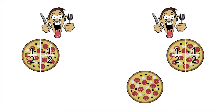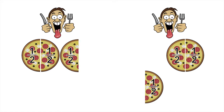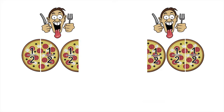We can do exactly the same thing for the third pizza. Divide it up into two equal sized slices and share it out so each customer gets one half.